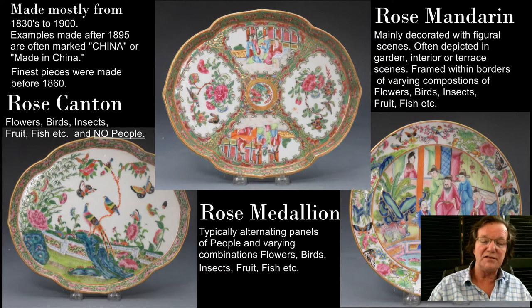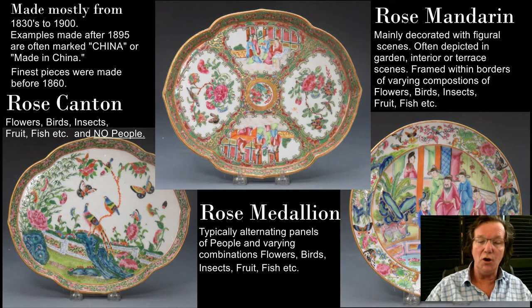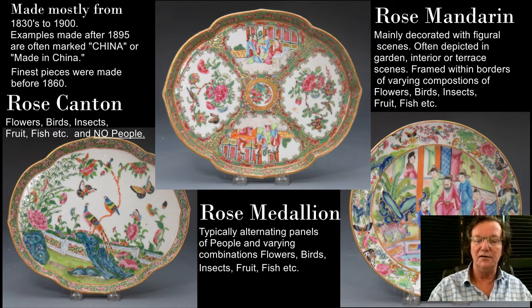On the left is rose canton, and on rose canton you typically only see flowers, birds, insects, fruit, fish, that sort of thing — just no people ever. No people on rose canton.